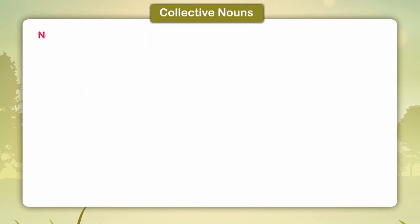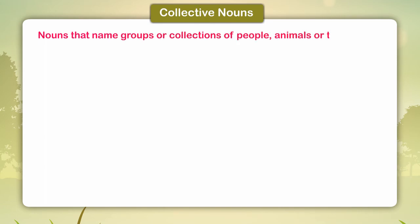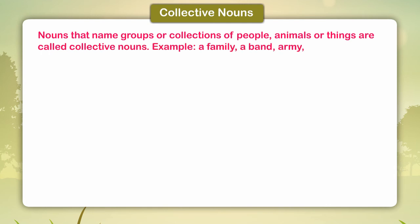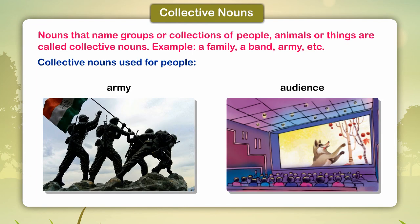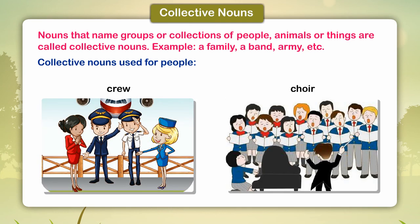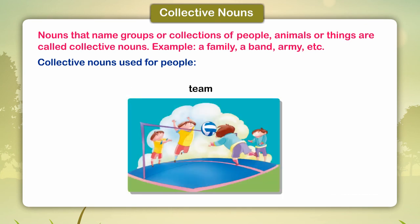Collective nouns: Nouns that name groups or collections of people, animals, or things are called collective nouns. Example — People: a family, a band, army, etc. Collective nouns used for people: army, audience, crew, corps, team.